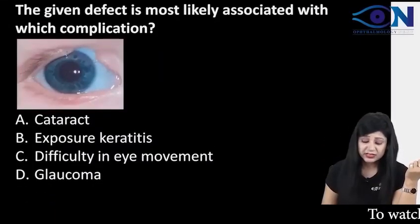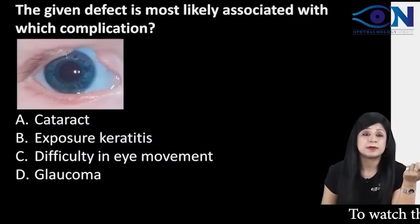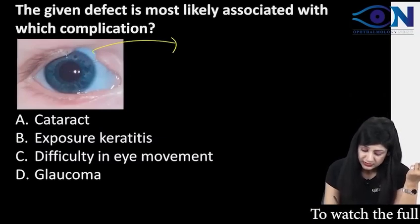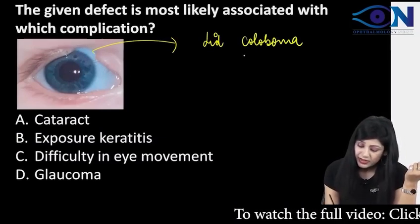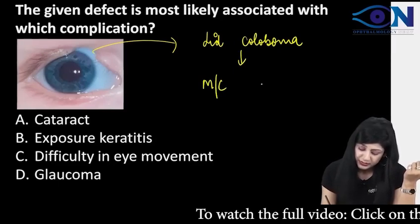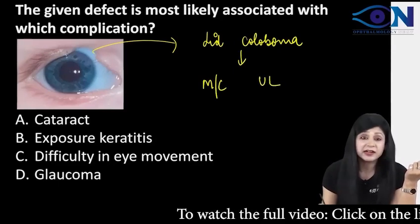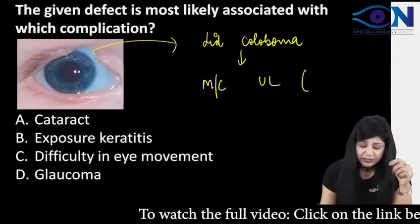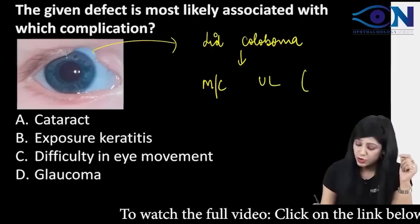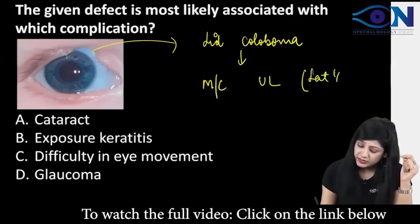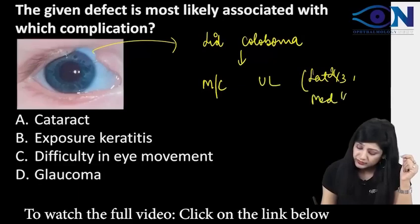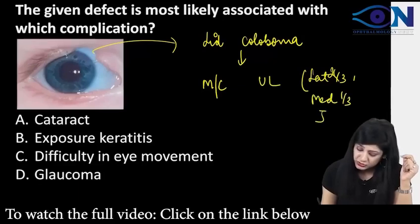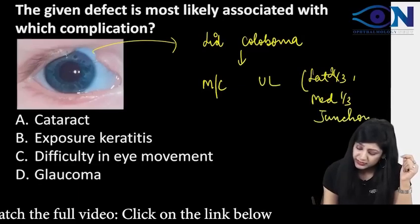The given defect is associated with which complication? What is this defect? You can see this is a lid coloboma. This is a lid coloboma and it is most common in the upper lid — specifically at the lateral two-third and medial one-third junction. This is the most common site.